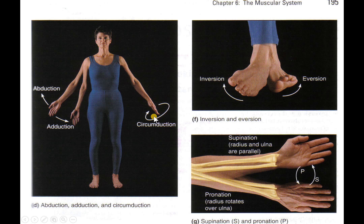Circumduction is the ability to make circles. Inversion of the ankle — also called supination. Inversion or supination. Eversion or pronation. Know both.